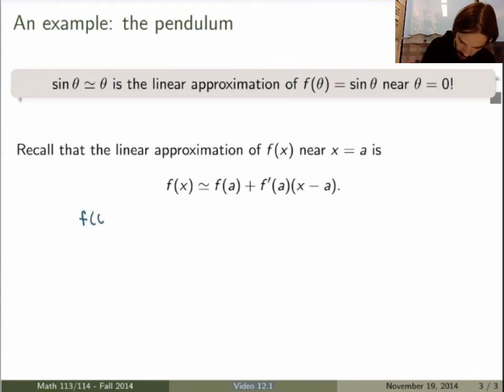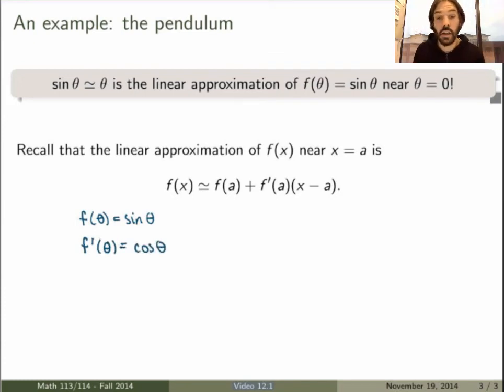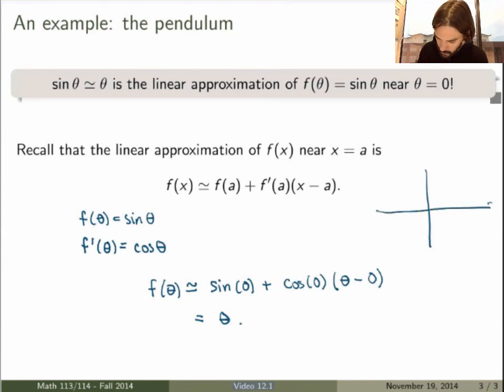So here our function is sin(θ). The derivative of our function, of course, is cos(θ). And here we're interested in the linear approximation near θ equals 0. So we're going to write f(θ) as being approximately equal to f(0), which is sin(0), plus f'(0), which is cos(0), times (θ minus 0). But sin(0) is 0, cos(0) is 1, so we end up with simply θ. So in other words, the linear approximation of the function sin(θ) near θ equals 0 is just θ. Again, you can see from the graph that this makes sense.